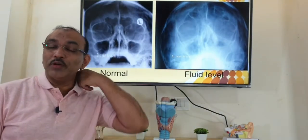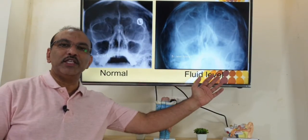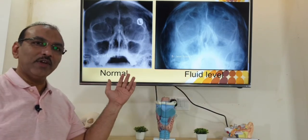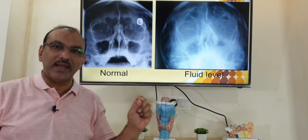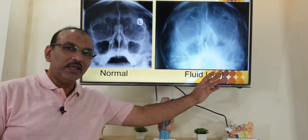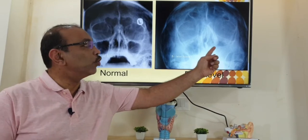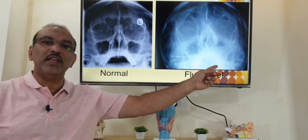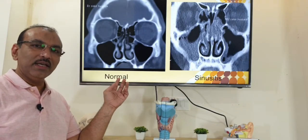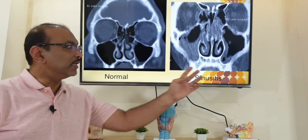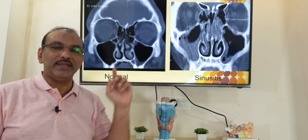Let us look at the x-ray. This is the normal x-ray; this is an x-ray in a patient with sinusitis. On the normal x-ray, the sinuses inside will be black — meaning there is air inside. In the sinusitis picture, the left side sinus is white with a fluid level, indicating infection in the left maxillary sinus. Likewise on CT scan, normal sinuses inside are black; if the right side shows white, that means there is sinusitis on the right side.